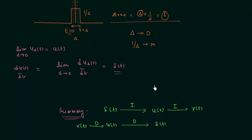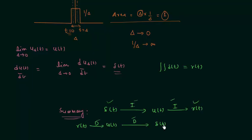What is the relation between unit impulse signal and unit ramp signal? From this you can see: on double integrating the unit impulse signal we have the unit ramp signal, and on double differentiating the unit ramp signal we have the unit impulse signal. So this is the complete relation between unit impulse signal, unit step signal, and unit ramp signal.